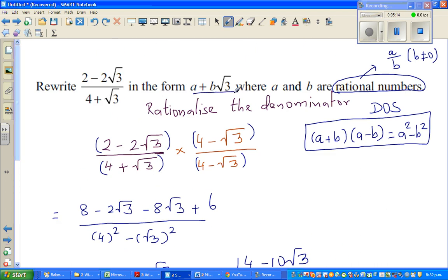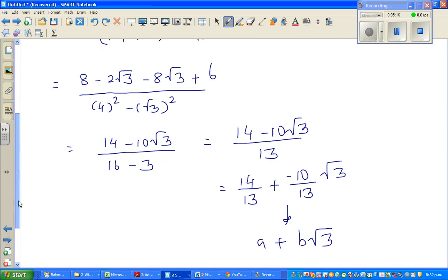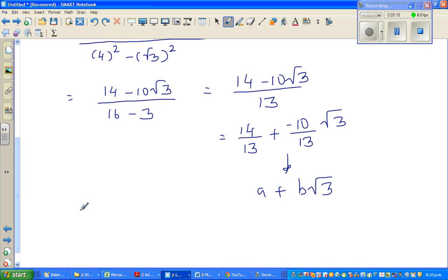It's a plus b root 3. So just to explain what is our a, a is 14 over 13. Now this is a rational number. And your b is negative 10 over 13. And that's your answer.